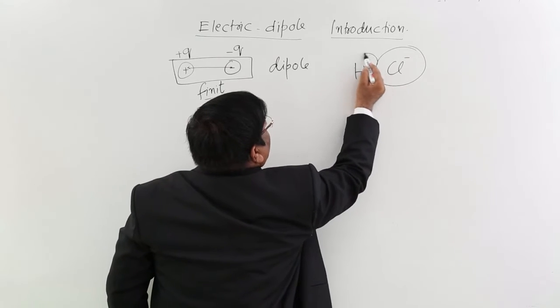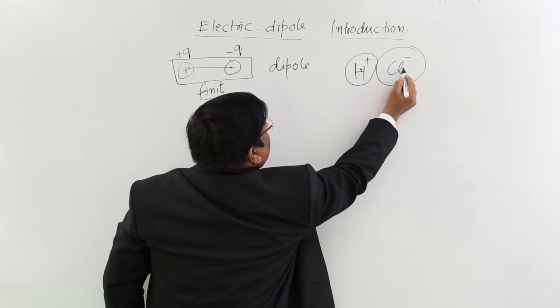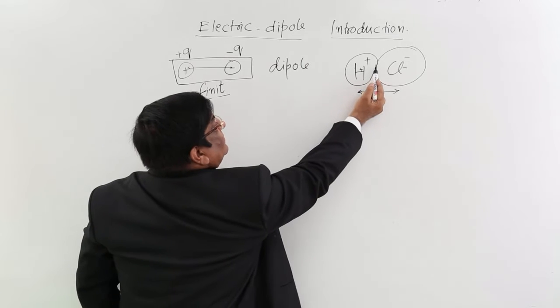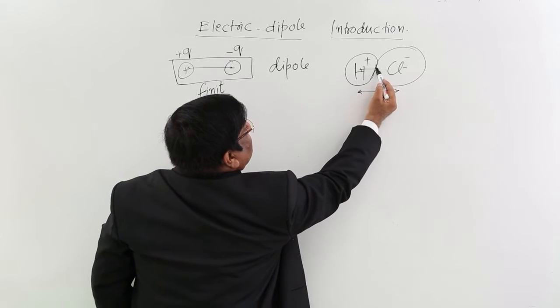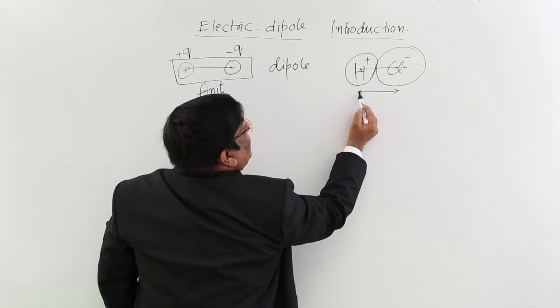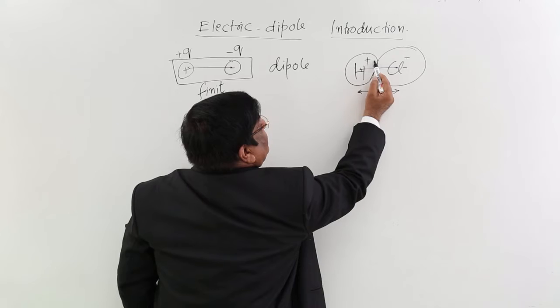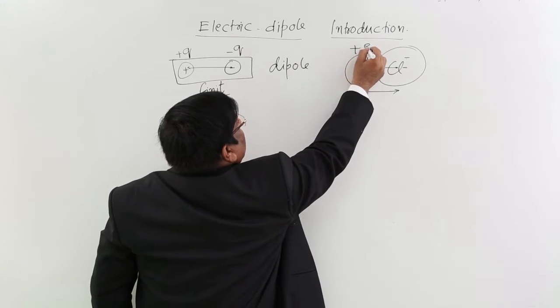This is the center of positive, this is the center of negative, and this is the fixed distance border to border. This is the radius of H, this is the radius of Cl, and this is the fixed distance between them. There is a Coulomb force of attraction—they attract each other. This has got charge plus E,